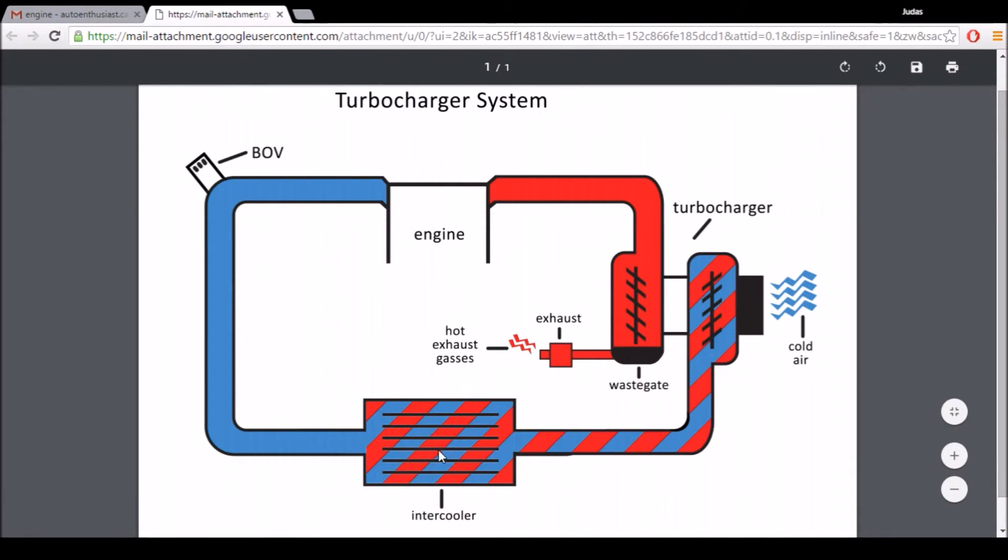So now this cooler pressurized air travels through the intake manifold, which is up here on the cold side of the turbosystem. Then it passes over where the blow-off valve is and then re-enters the engine chamber to repeat the next engine cycle.